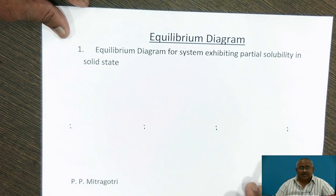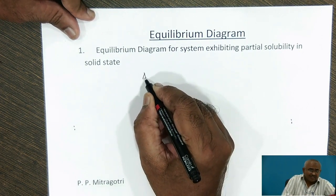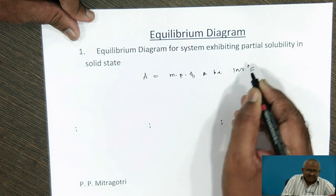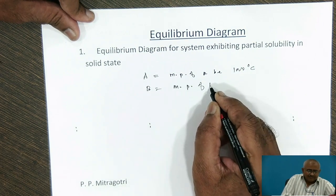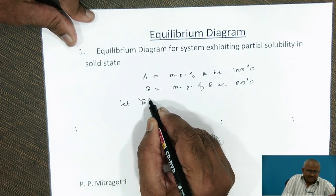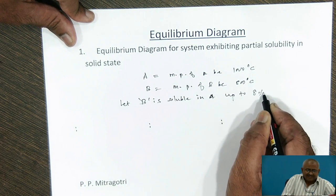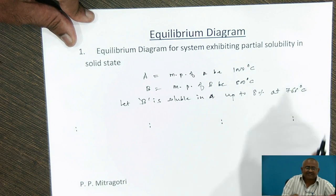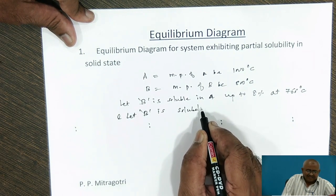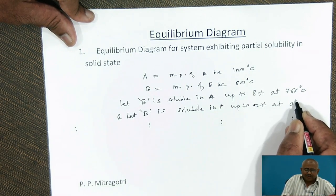To construct equilibrium diagram of such type, we need to have some data. Let us assume two metals A and B, let melting point of A be 1000 degrees Celsius and melting point of B be 800 degrees Celsius. Let B be soluble in A up to 8% at 766 degrees Celsius and up to 2% at room temperature.